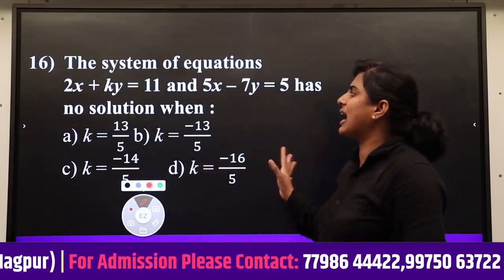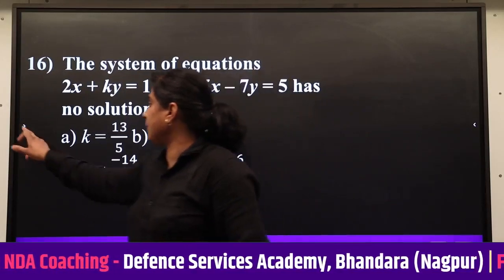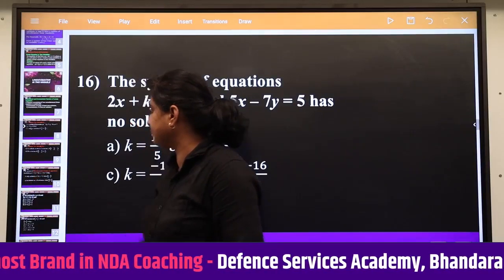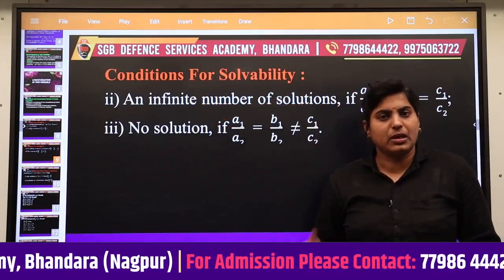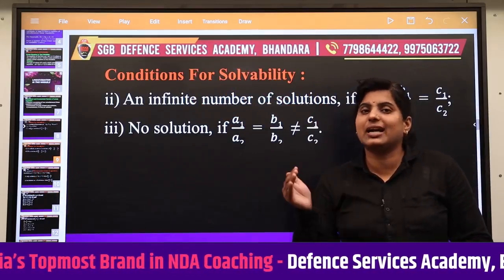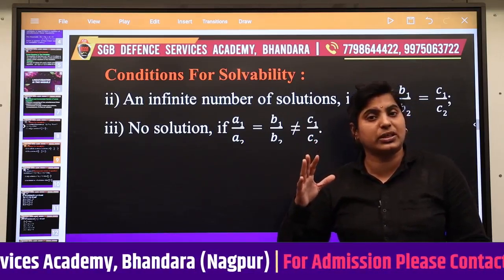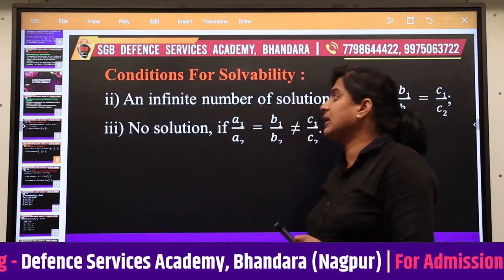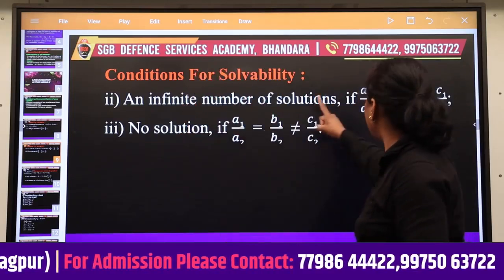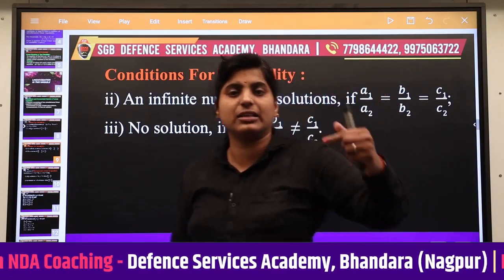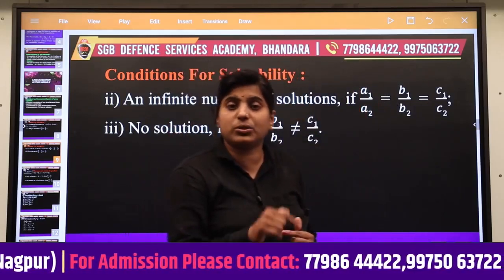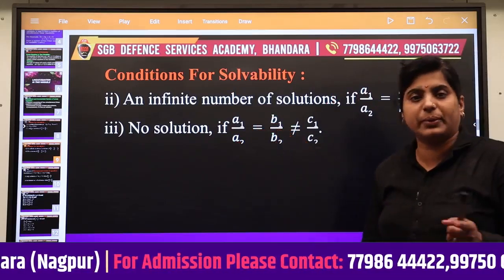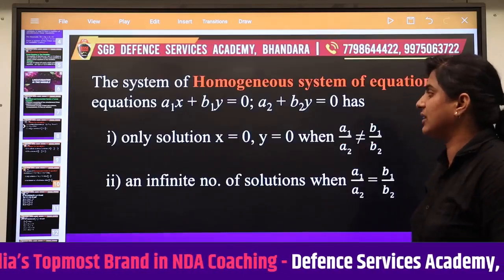Now question 16: the condition for a system to have no solution. Remember: the system has no solution when a1/a2 = b1/b2 but ≠ c1/c2. For infinite solutions, all ratios are equal: a1/a2 = b1/b2 = c1/c2. For a unique solution: a1/a2 ≠ b1/b2.